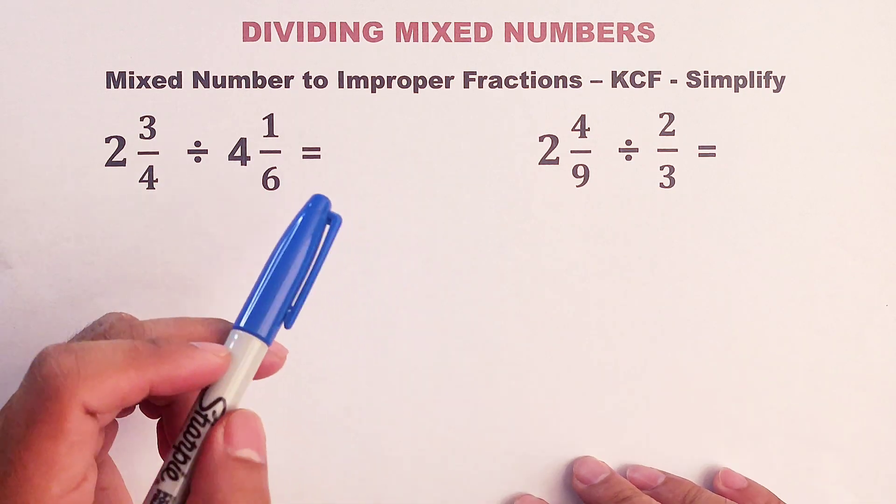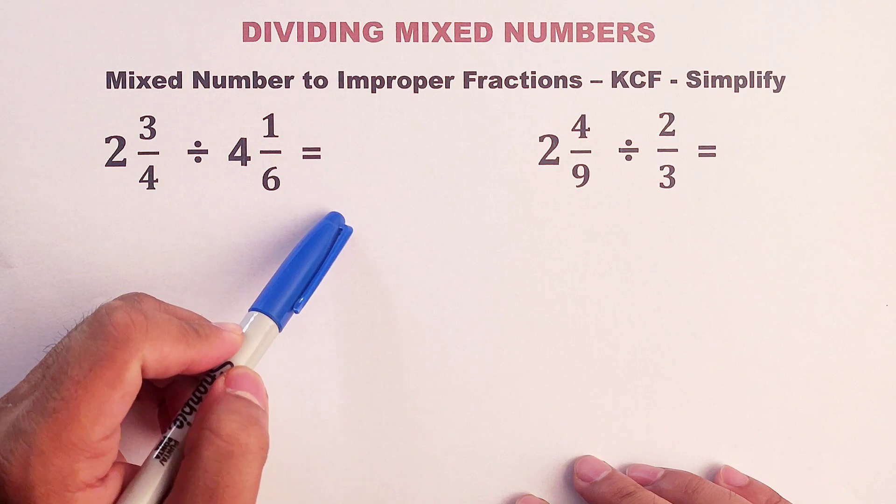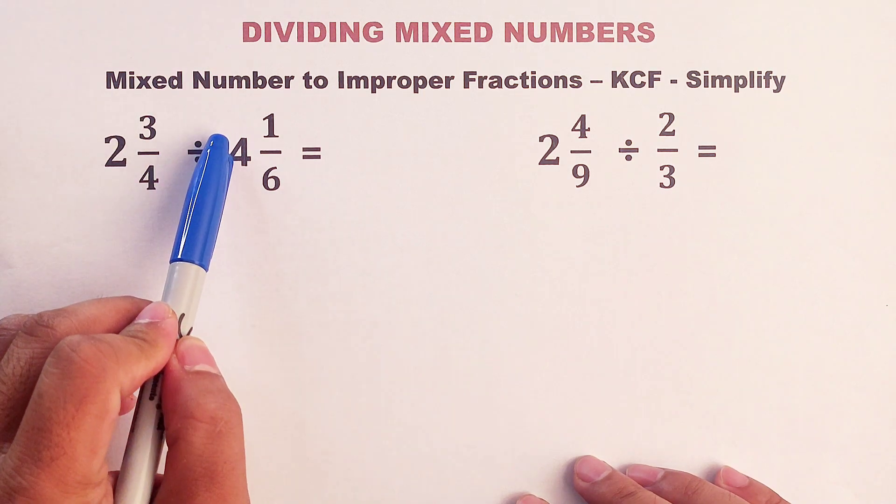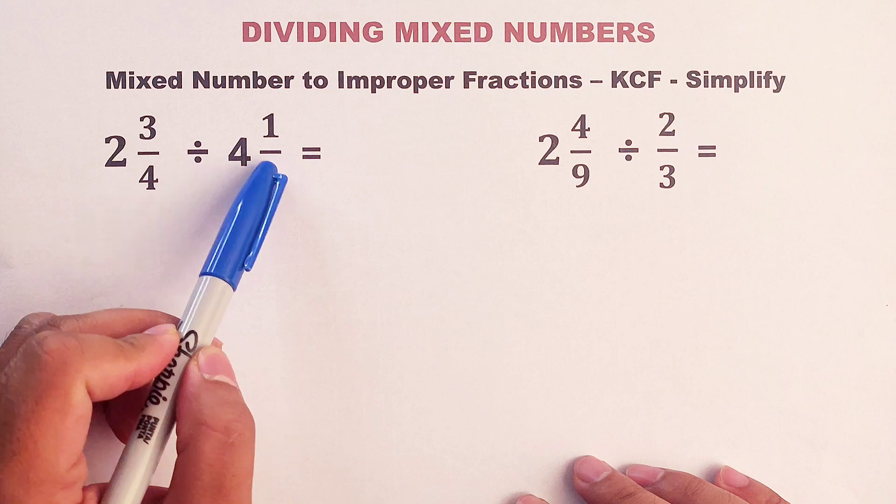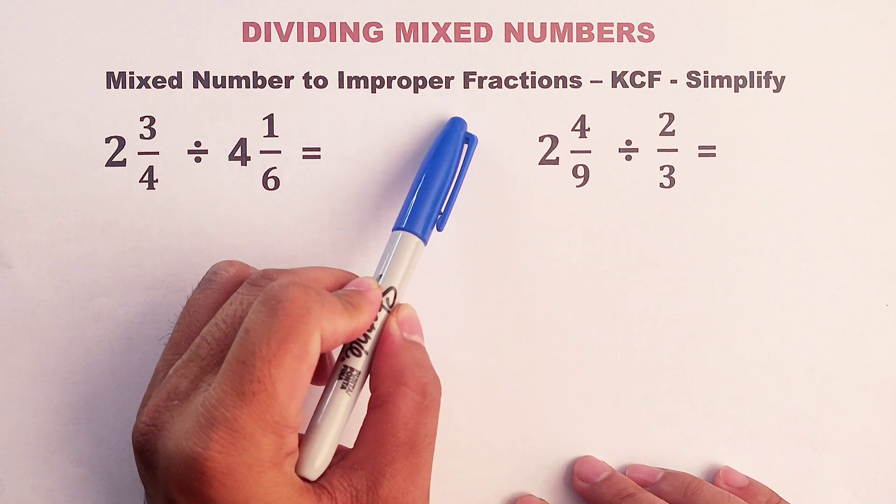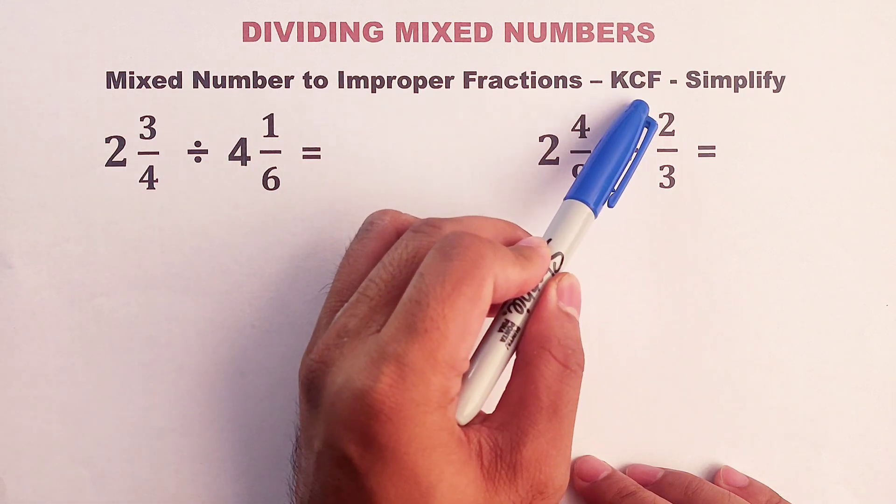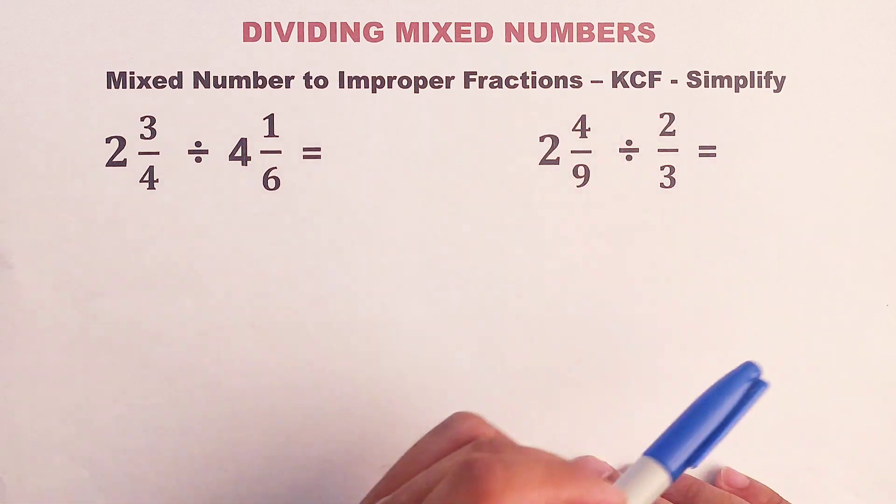Here are the three simple steps on how to divide mixed numbers. First, we'll convert the mixed number to improper fractions, and then we will use the KCF method to divide the fractions. Then we will simplify.